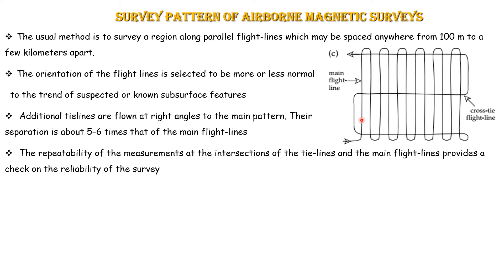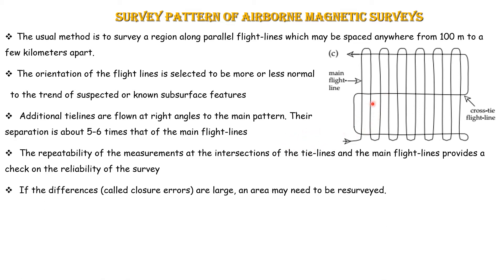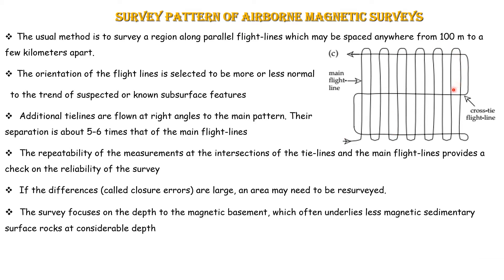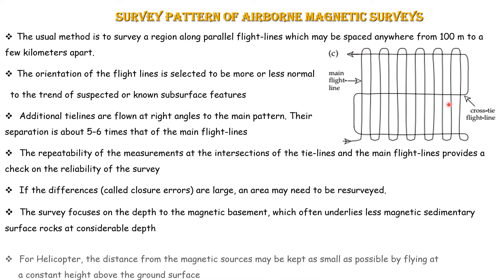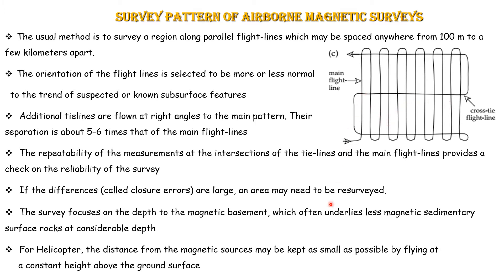The tie lines and main flight lines together check repeatability and reliability of the data. At the intersections of main lines and cross tie lines, we check whether we are getting the same data — any deviations are noted. If differences are large, the area must be re-surveyed; these differences are called closure errors. When employing helicopter, the distance from the magnetic source must be kept small, flying at very low height to get more detailed information.